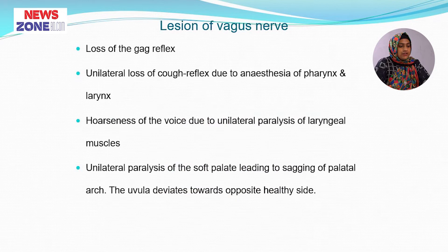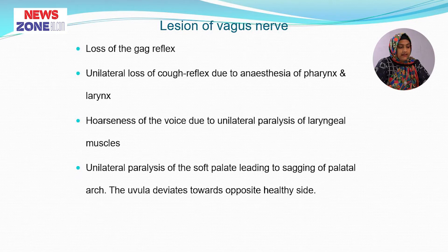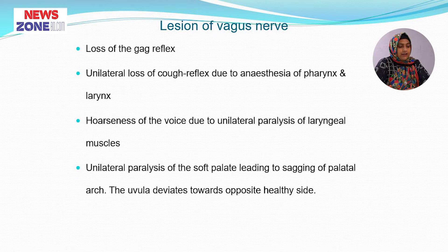If there is a lesion of the vagus nerve, there is loss of the gag reflex and unilateral loss of the cough reflex due to anaesthesia of the pharynx and the larynx. Hoarseness of the voice due to unilateral paralysis of the laryngeal muscle, and unilateral paralysis of the soft palate leading to swinging of the palatal arches — the uvula deviates towards the opposite healthy side.